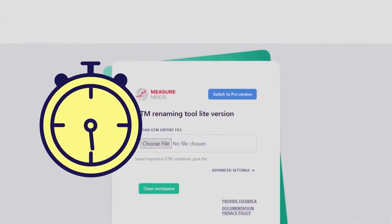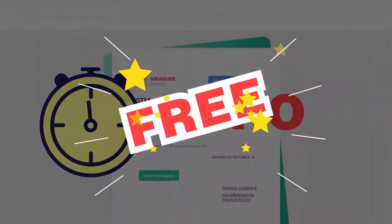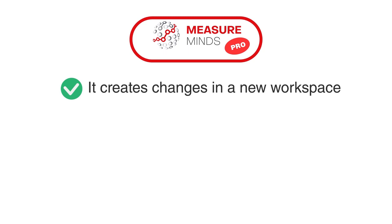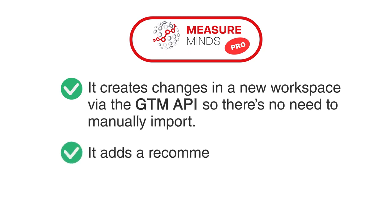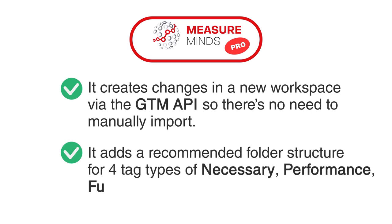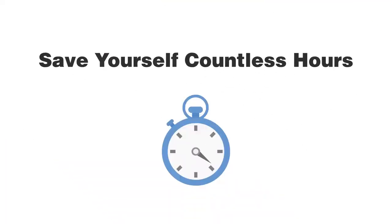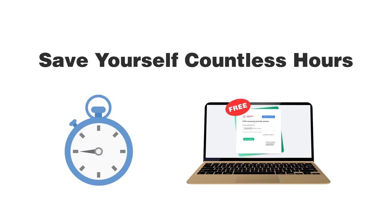Also, for a limited time, you can access the pro version of the tool for free. It has two additional features: it creates changes in a new workspace via the GTM API, so there's no need to manually import; and it adds a recommended folder structure for four tag types — necessary, performance, functional, and targeting. Save yourself countless hours with MeasureMinds' free GTM cleanup tool today.